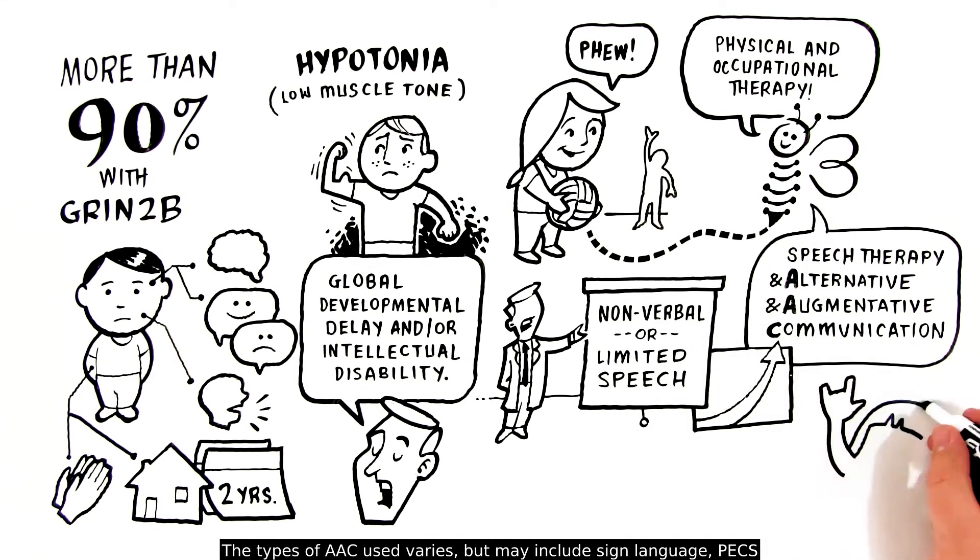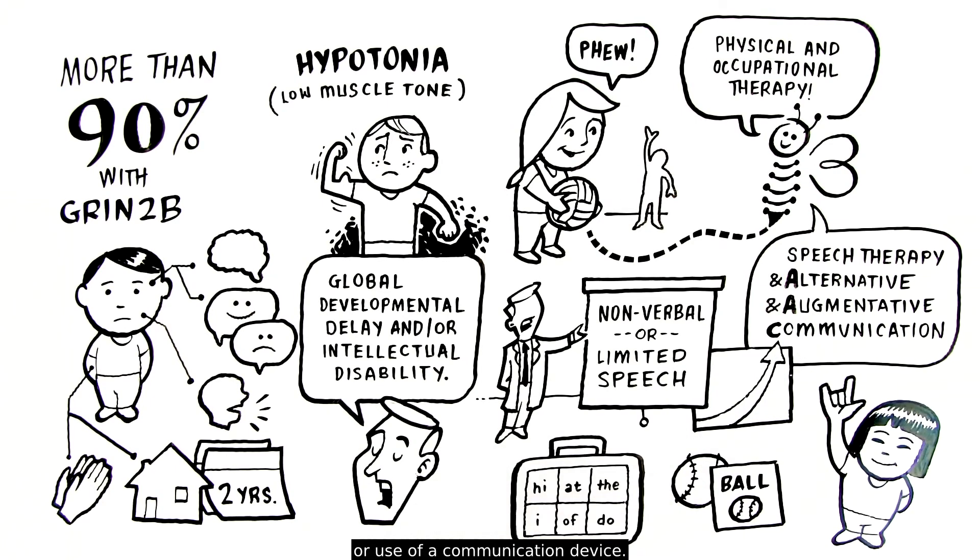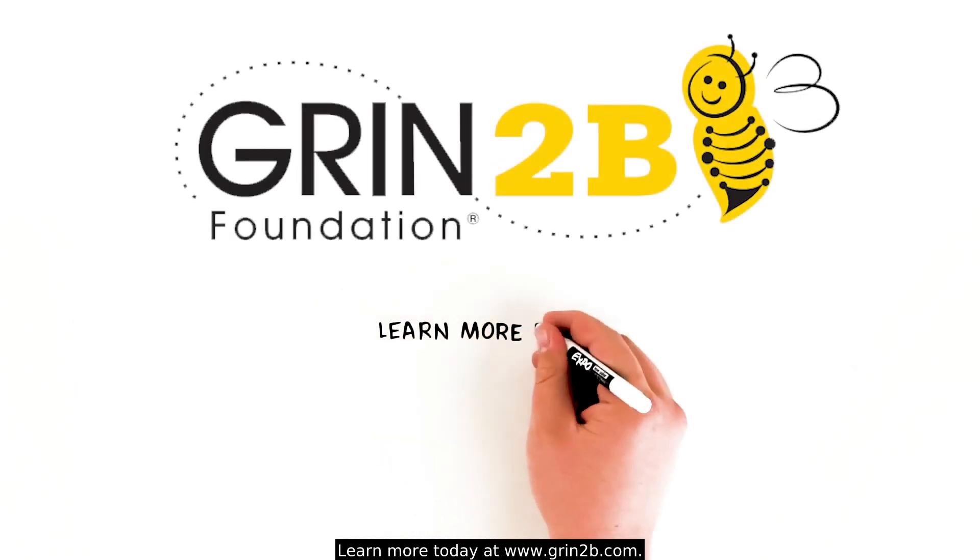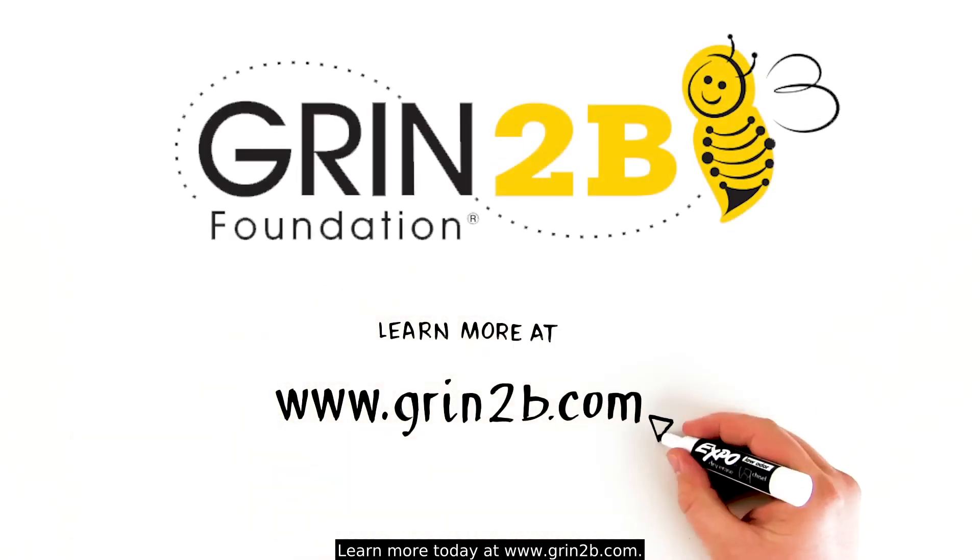The types of AAC used varies but may include sign language, PECS, or use of a communication device. Learn more today at GRIN2B.com.